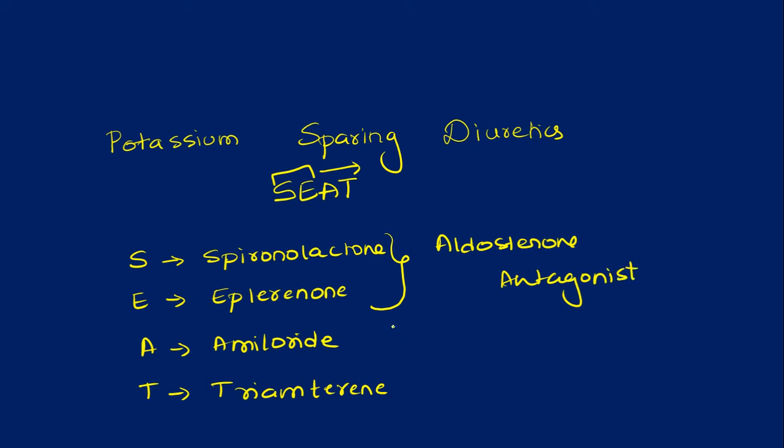Whereas amiloride and triamterene, these two drugs will have this action, that is they are epithelial sodium channel blockers. So renal epithelial sodium channel blockers.